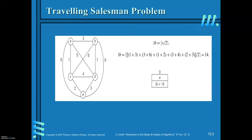We will see how to solve this problem using branch and bound design technique, because this is a combinatorial optimization problem. Since it is a minimization problem — you are required to minimize the tour length — you are required to find out the lower bound. Lower bound equals ceil of S divided by 2.